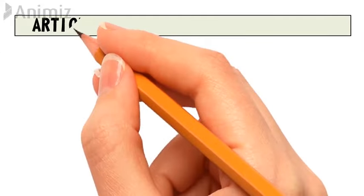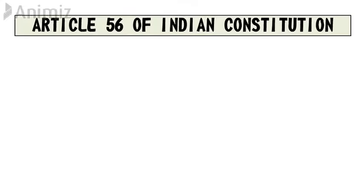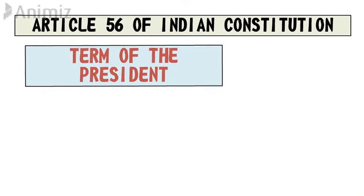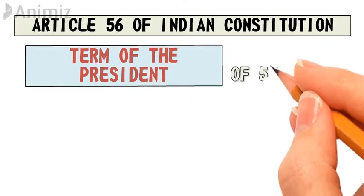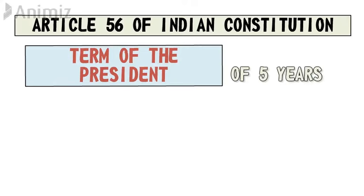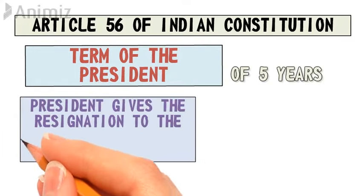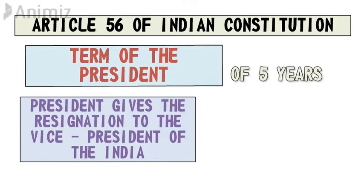Article 56 of the Indian Constitution talks about the term of the President. The term means how long a person, once elected as President, will continue to serve as President. According to Article 56, the President's tenure is five years. If someone is elected as President, they will remain President for the next five years. The President submits his resignation to the Vice President of India.